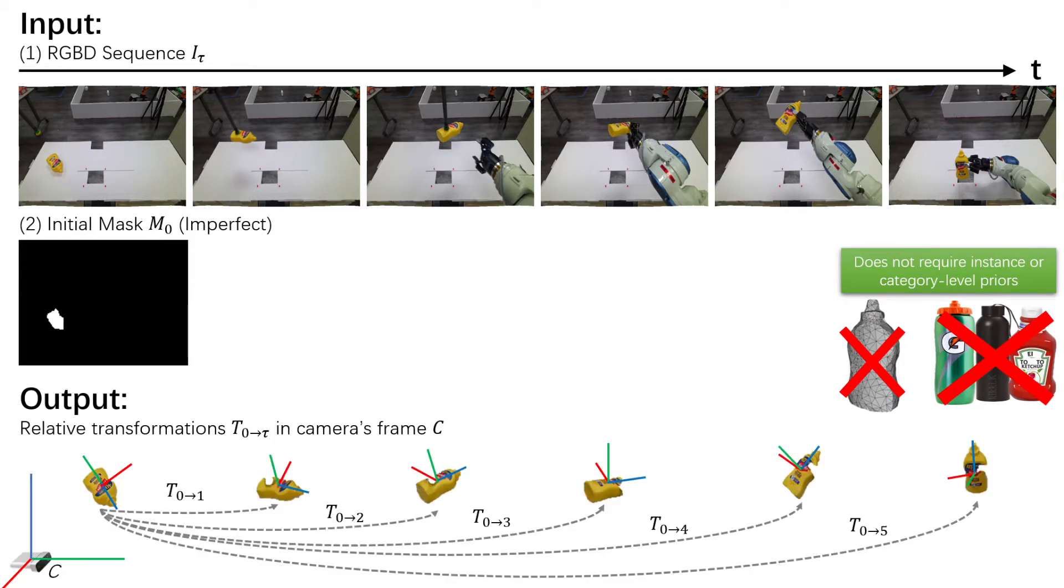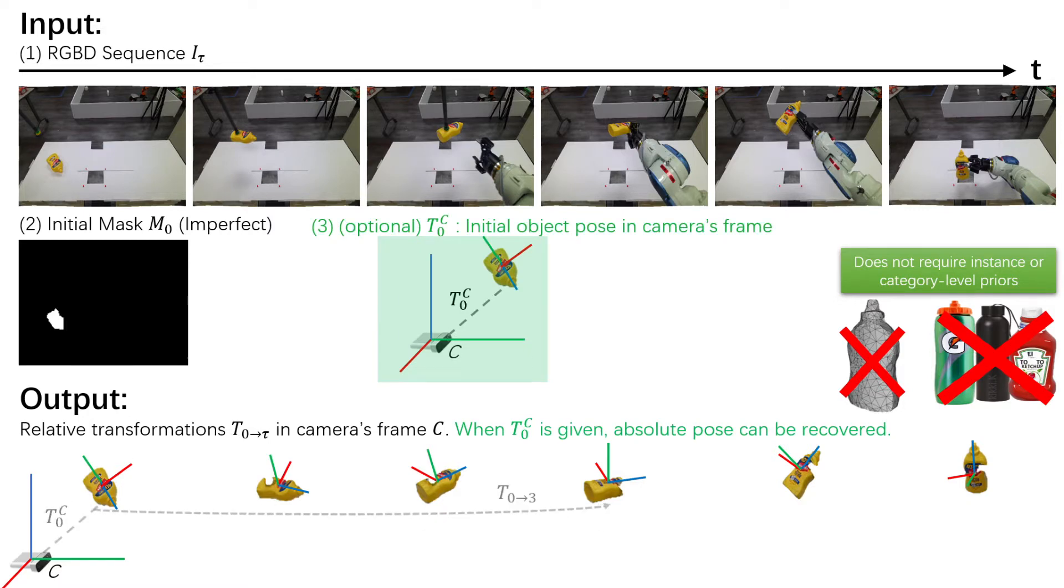BundleTrack outputs the transformation at any timestamp relative to the initial pose in front of the camera. When there is a predefined coordinate frame for the object, its initial pose is used for initializing the tracking. Otherwise, the initial absolute object pose is simply set to identity by treating the camera's origin as the unknown object's local coordinate frame.